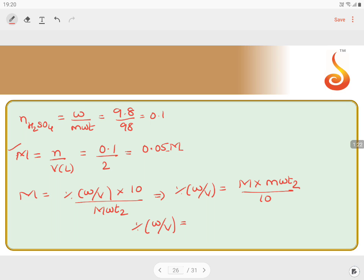Percentage weight by volume equals molarity 0.05 times 98 by 10. 98 by 10 is 9.8, and 0.05 times 98 is 4.9. So 4.9 by 10 equals 0.49 percentage.